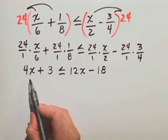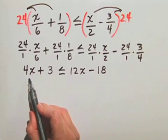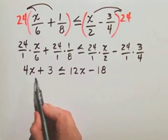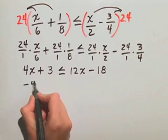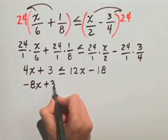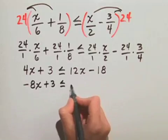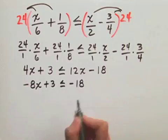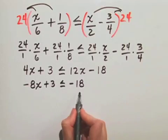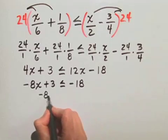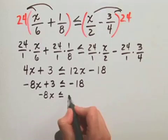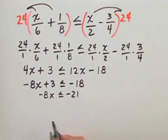Now we can move the x's to the left hand side of this inequality. We'll subtract 12x from both sides, and we have negative 8x plus 3 is less than or equal to negative 18. When we subtract 3 from both sides of this inequality, we have negative 8x is less than or equal to negative 21.